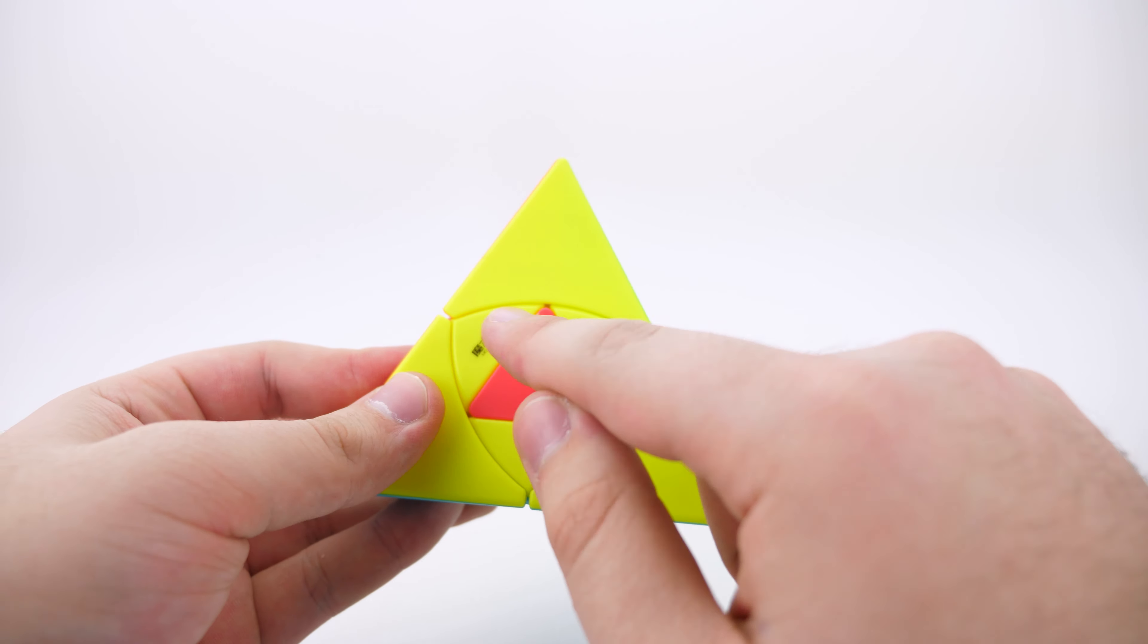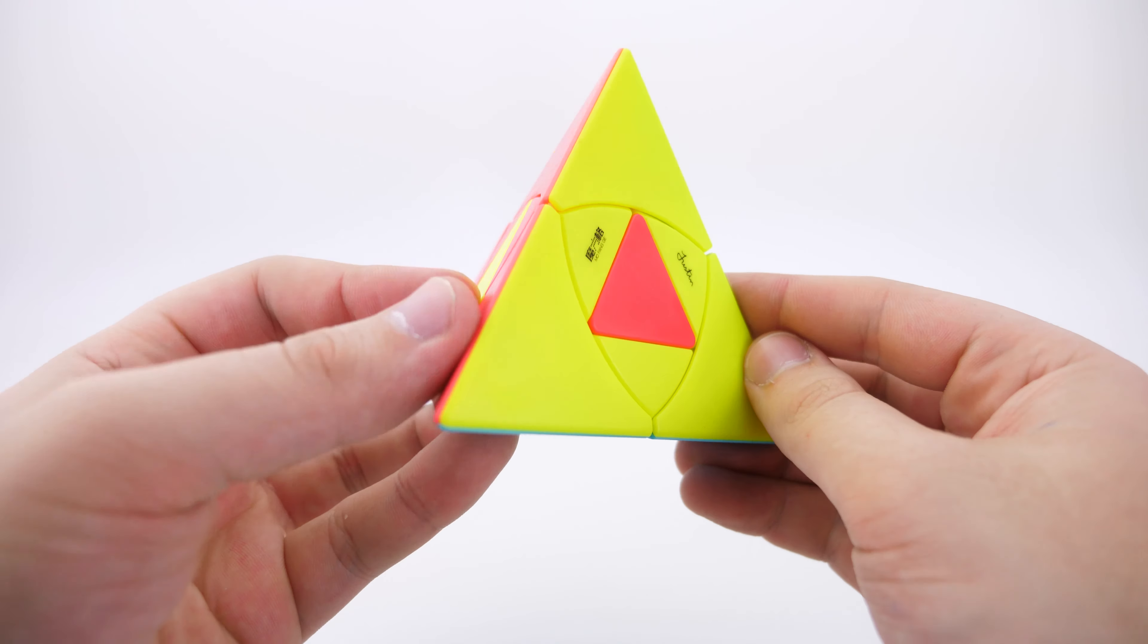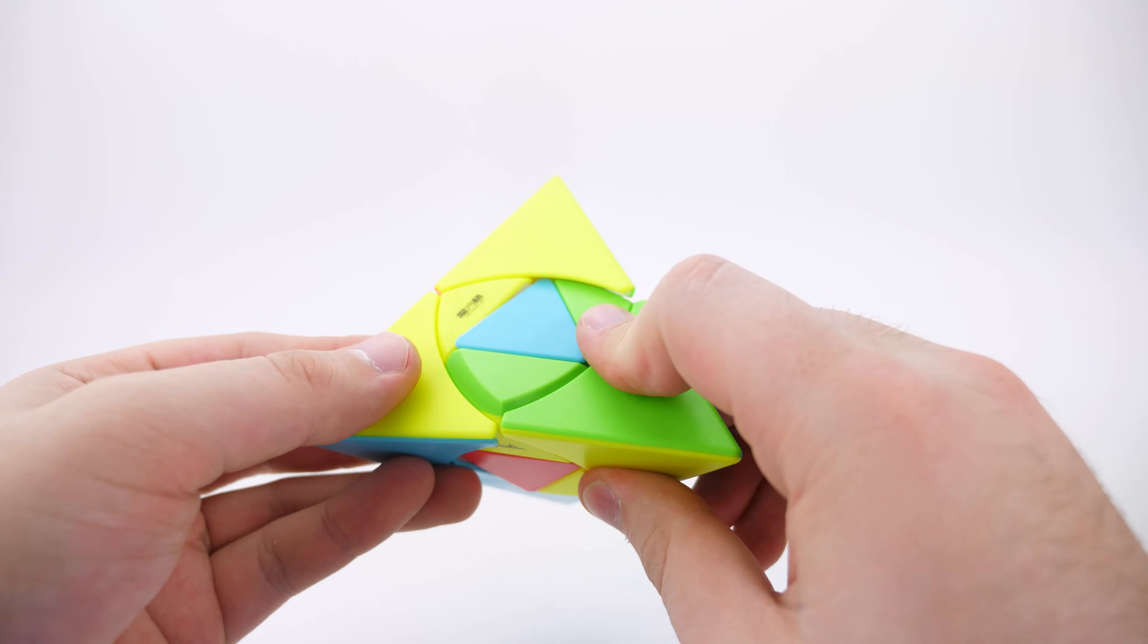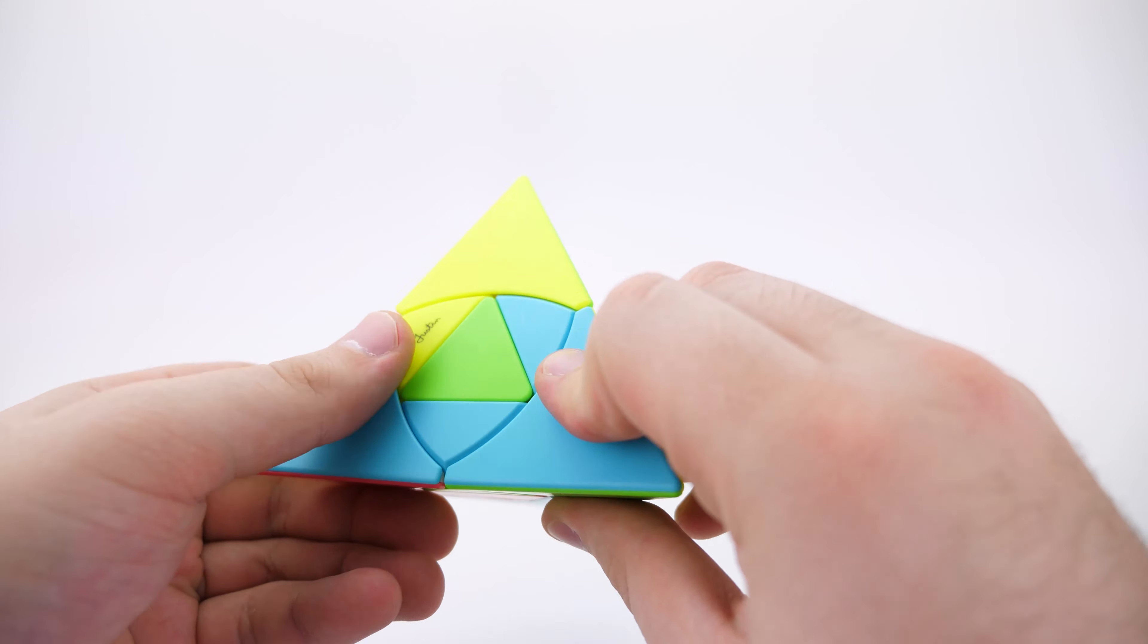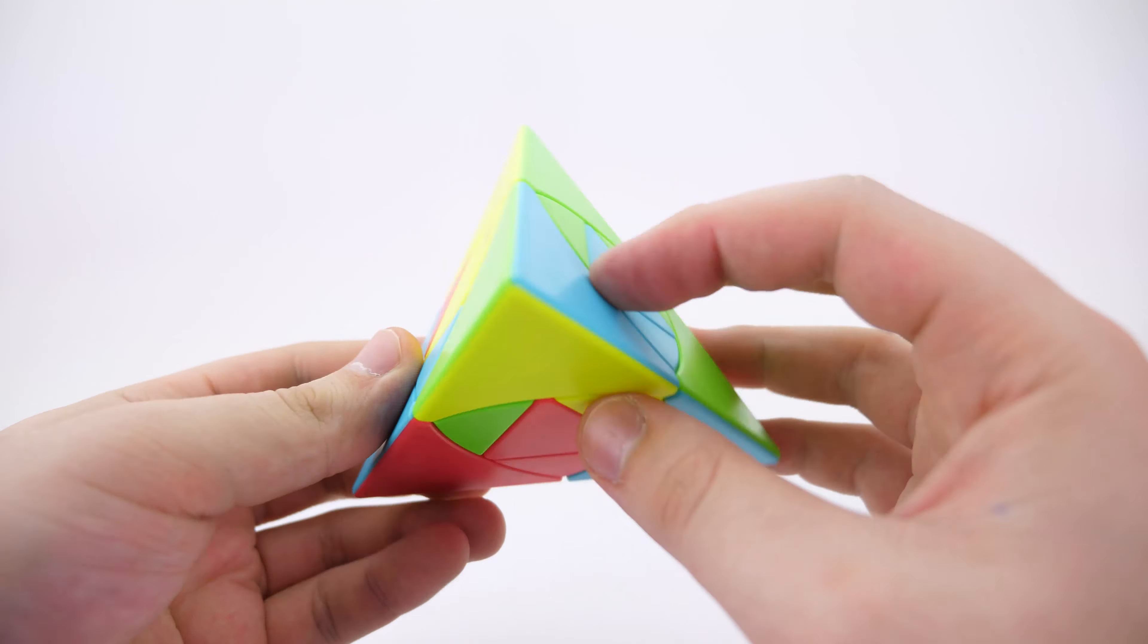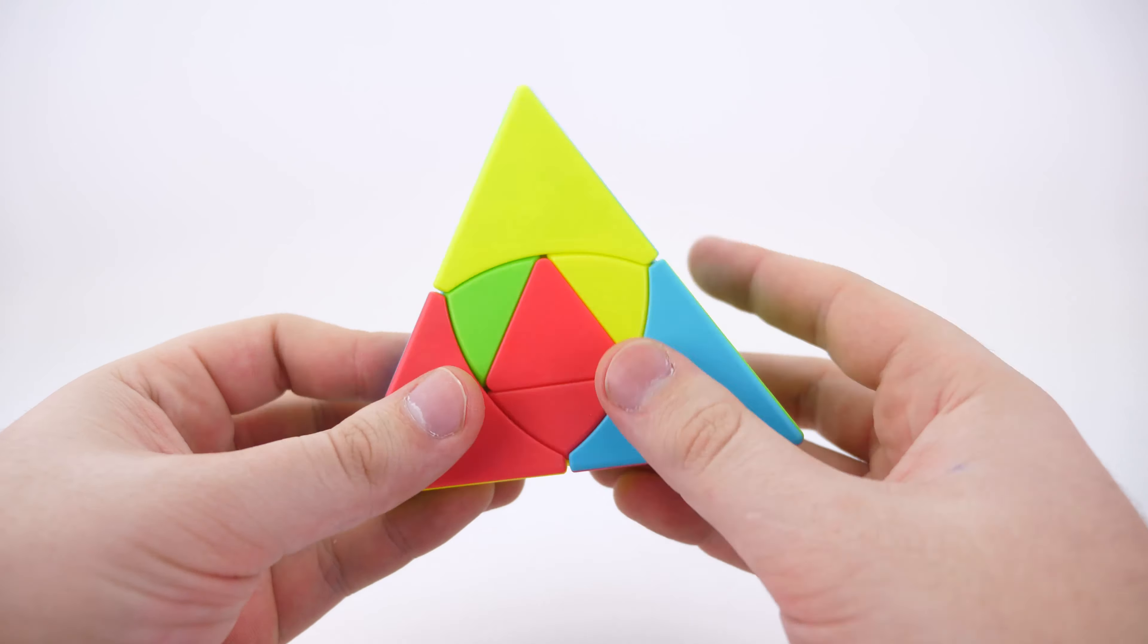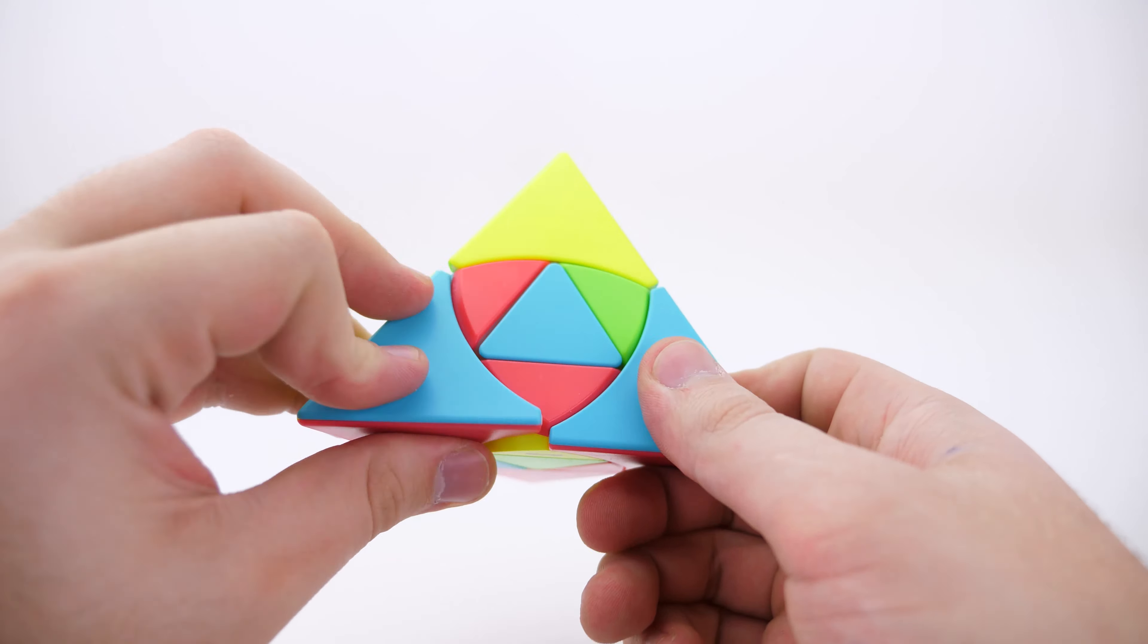Cause I don't quite remember if the duo has these little inner parts here, but I'm not even sure if they matter. Oh, I think they do for scrambling this cube. Maybe let me know in the comments about that. I'm not too sure, but the turning of this puzzle is really good.